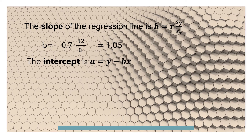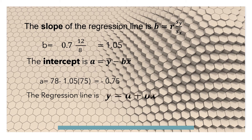The intercept a equals y-bar minus b times x-bar, where y-bar is 78 and x-bar is 75. Using the b value we already obtained, we substitute and get the intercept a as negative 0.75. So the regression line y-hat equals a plus bx will be: y-hat equals negative 0.75 plus 1.05x.